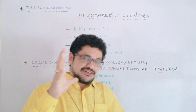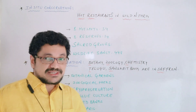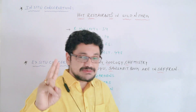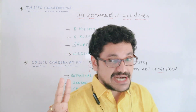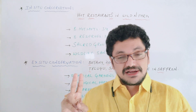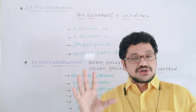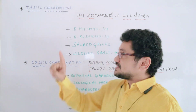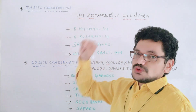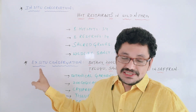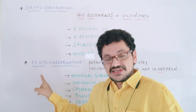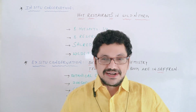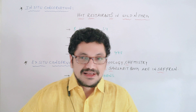What are the different ways to protect the nature? Basically there are two types of conservation strategies to conserve the nature. The first one is in-situ conservation and the second one is ex-situ conservation. Two types of conservation techniques are there.